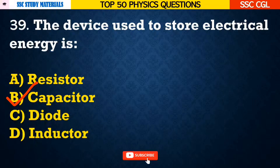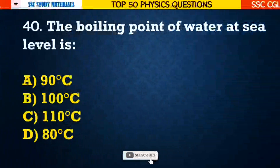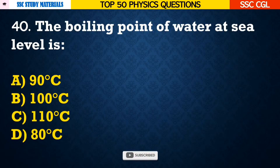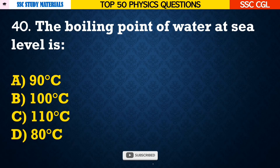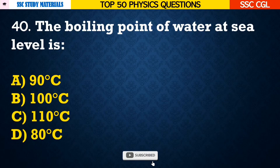Question number 40: The boiling point of water at sea level is — Answer B. 100 degrees Celsius.